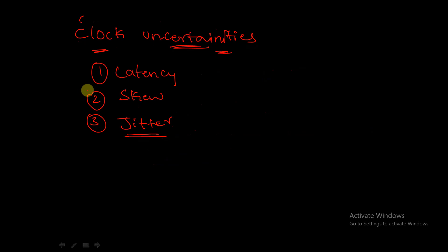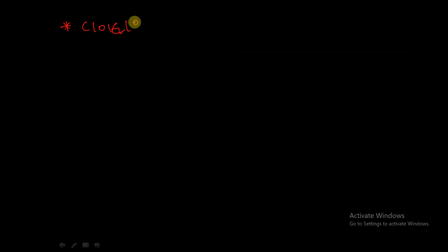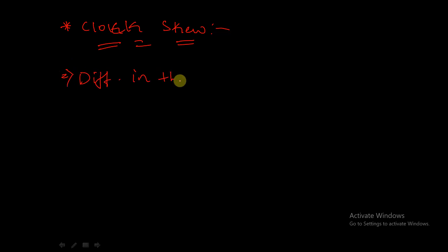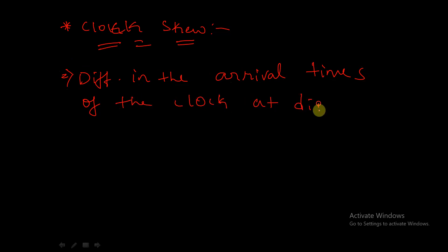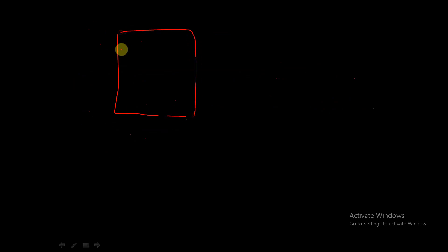The second type of clock uncertainty is called clock skew. The definition of clock skew is: the difference between the arrival times of the clock at different devices is called clock skew. Let us see with an example. We will take the example of a D flip-flop.